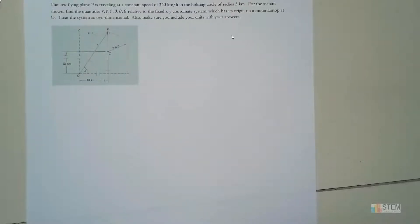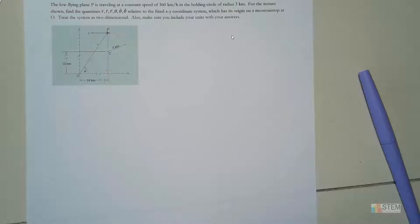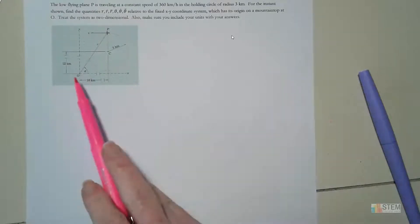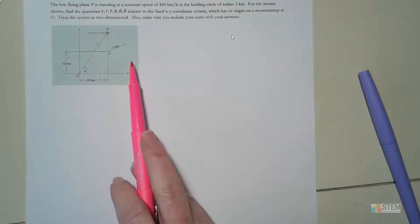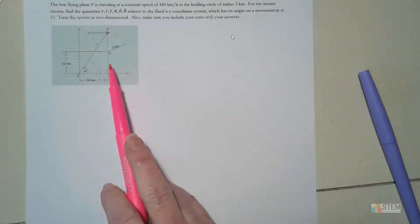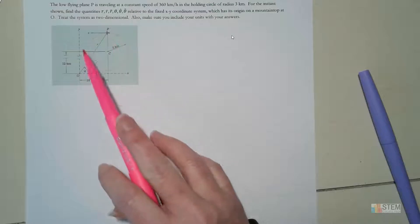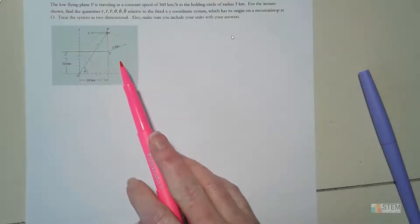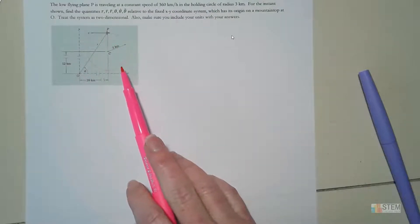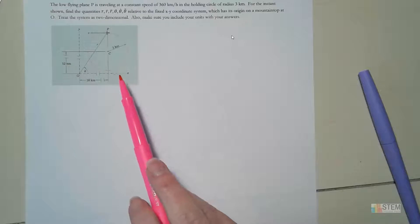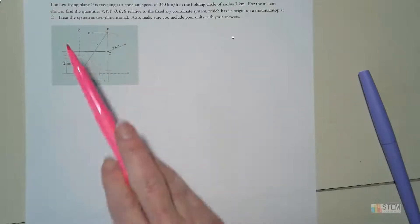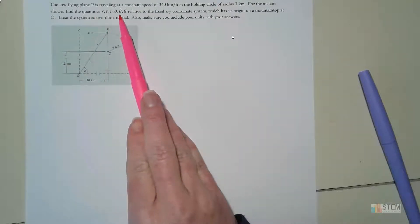We're going to be talking about polar coordinates — this is the quiz over polar coordinates that I gave. We've got a low-flying plane that's traveling at a constant speed of 360 kilometers per hour, flying in a holding circle. That circle has a radius of three kilometers. For the instance shown, we want to find six quantities.